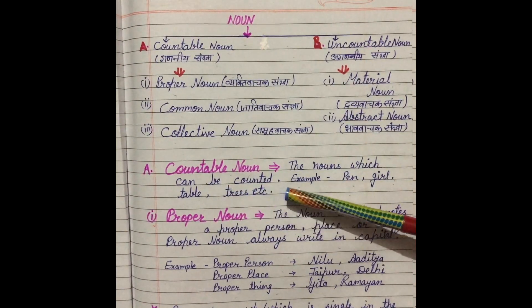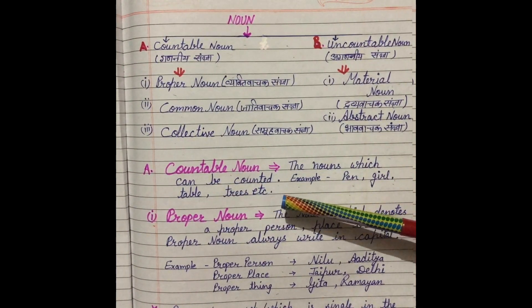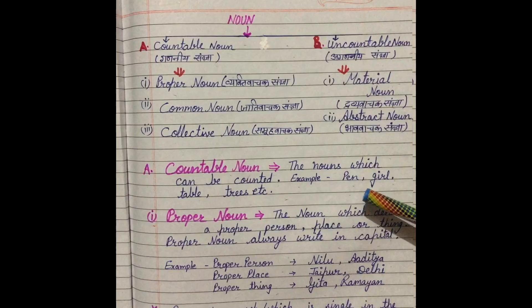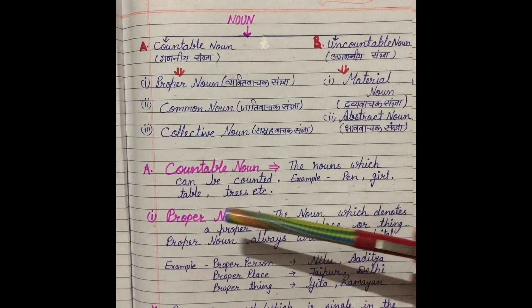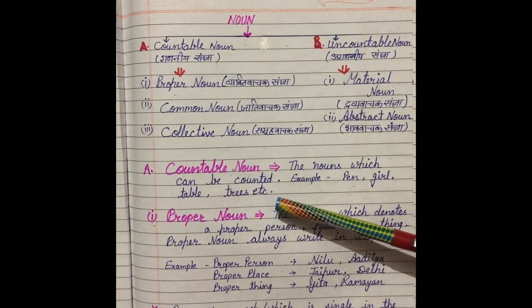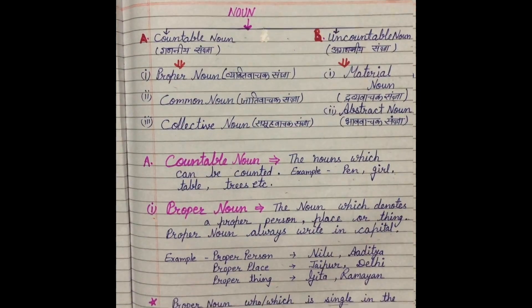The noun which can be counted, jo noun gini ja sakti hai, like pen, bird, table, trees etc. And in countable noun, first is proper noun.